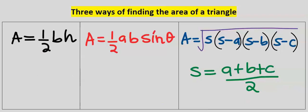There are three ways of finding the area of a triangle. The first is when you have the base and the height. The second is when two sides and an angle are given. The third is when you have three sides but no height and no angle.